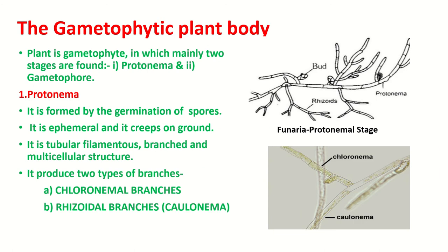Next we will discuss the structure of the gametophytic plant body of Funeria. In bryophytes, the dominant plant body is the gametophyte, and the same is the case in Funeria. The gametophytic plant body of Funeria mainly consists of two stages: first, the protonemal stage (juvenile stage), and second, the gametophore (adult stage). The protonemal stage is formed by the germination of spores.